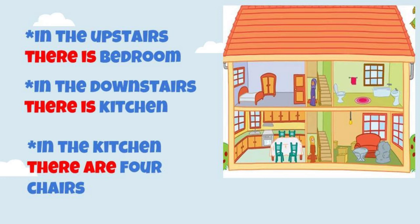Okay friends, from the picture we can see the difference between 'there is' and 'there are.' Dari gambar, kita bisa melihat perbedaannya. 'There is' and 'there are' artinya ada. But 'there is' is for singular nouns — digunakan untuk kata benda yang jumlahnya hanya satu. And 'there are' is for plural nouns — digunakan untuk kata benda yang jumlahnya lebih dari satu. For example: There is a bedroom — ada satu kamar tidur. There are four chairs — ada empat kursi.